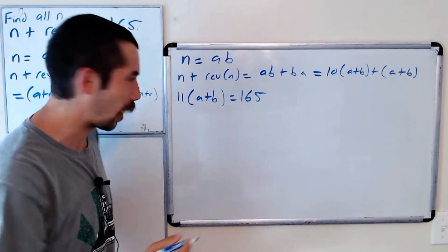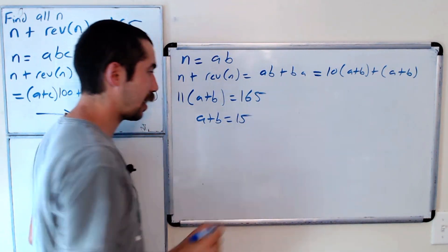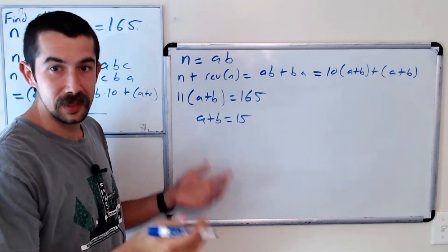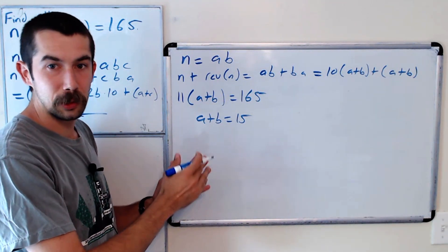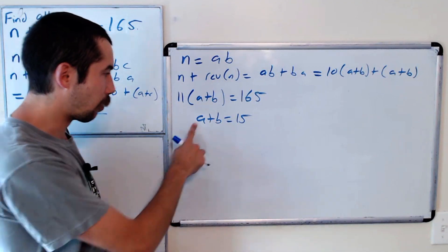Solving for a plus b, we get a plus b has to be 15. Now a and b are digits, so they're integers between 0 and 9 inclusive. So what are the options?